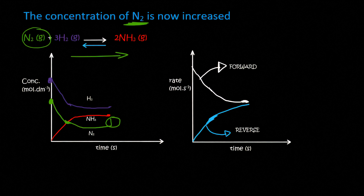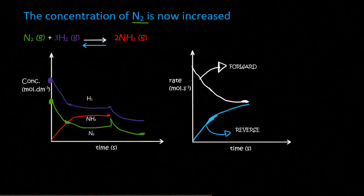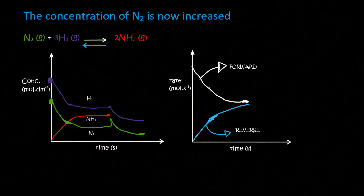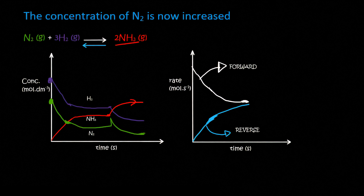The forward reaction is going to be favoured because if you go forward then you use up your nitrogen. So the nitrogen is now going to start decreasing, as well as the hydrogen. We can see that both the nitrogen and hydrogen have now gone down. Notice that the nitrogen had a little peak, because we added some nitrogen. Because the forward reaction is being favoured, the amount of ammonia will increase. And so there we have a system that has reached equilibrium for the second time — we can see that these three lines are all parallel once again.